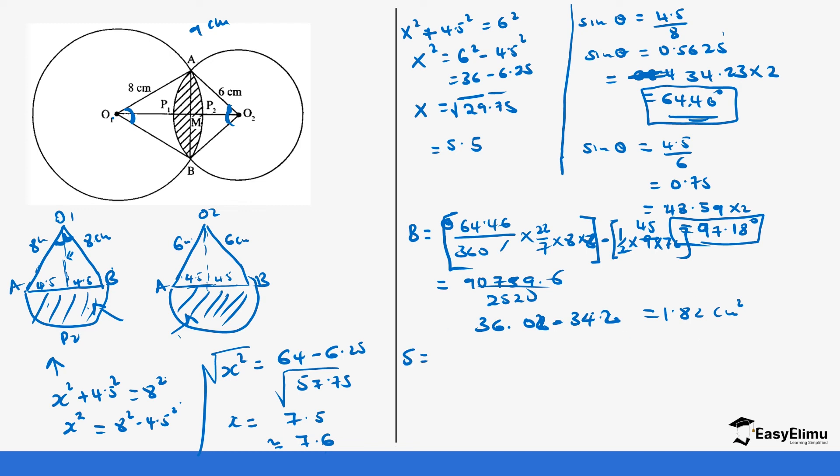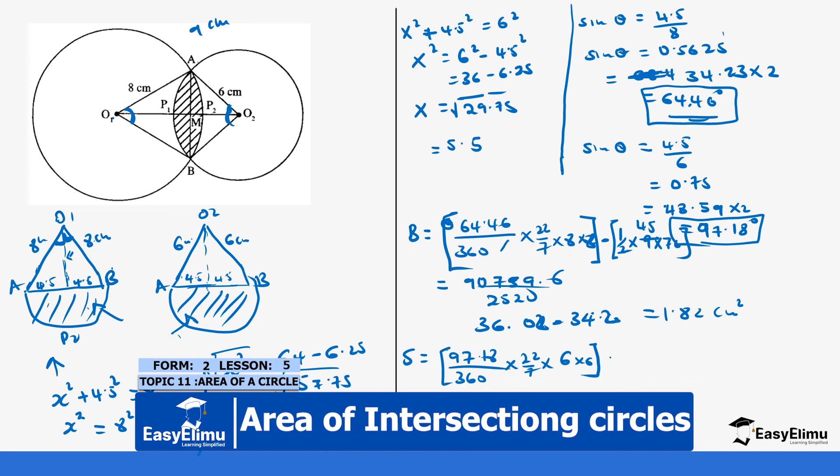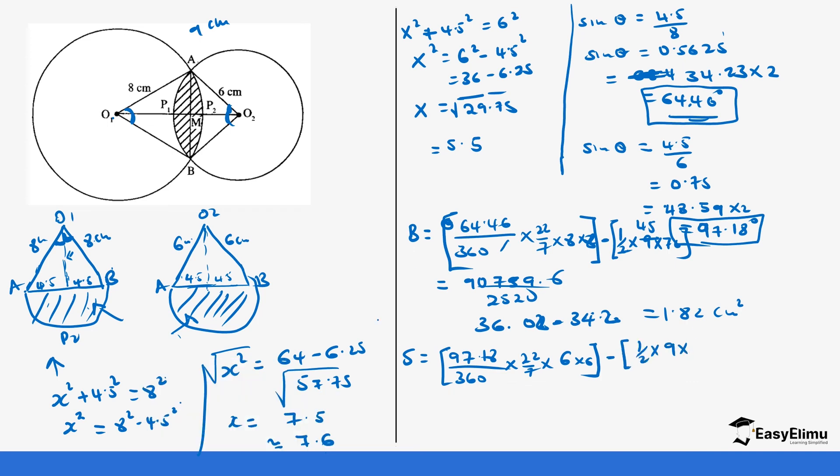And then the small one, same case. Our angle now is 97.18 over 360 times 22 over 7 times radius which is 6 times 6, minus our height. Our height we already calculated is 5.5.